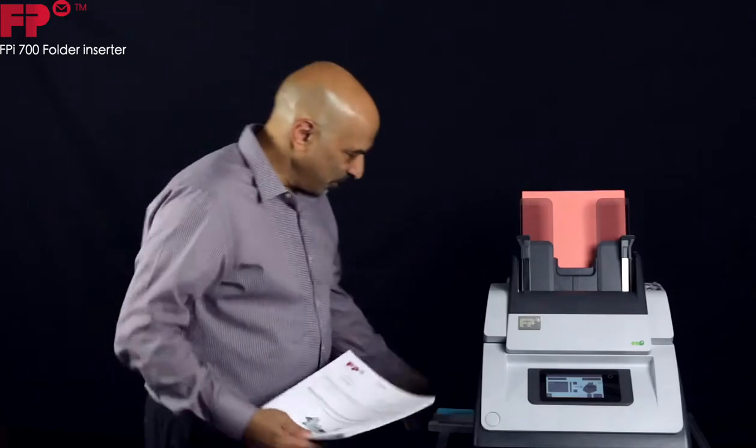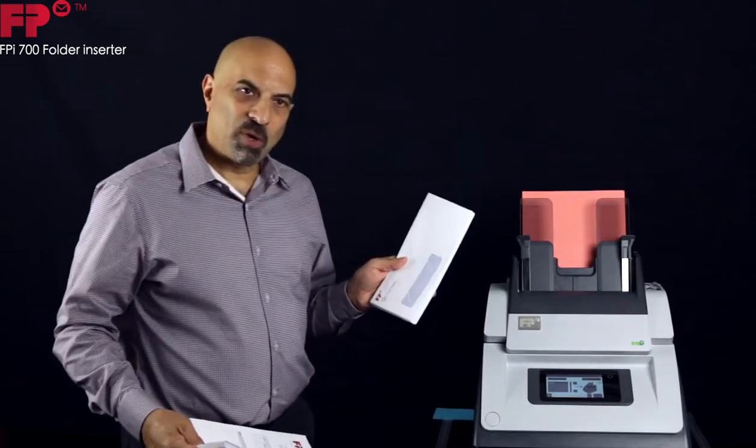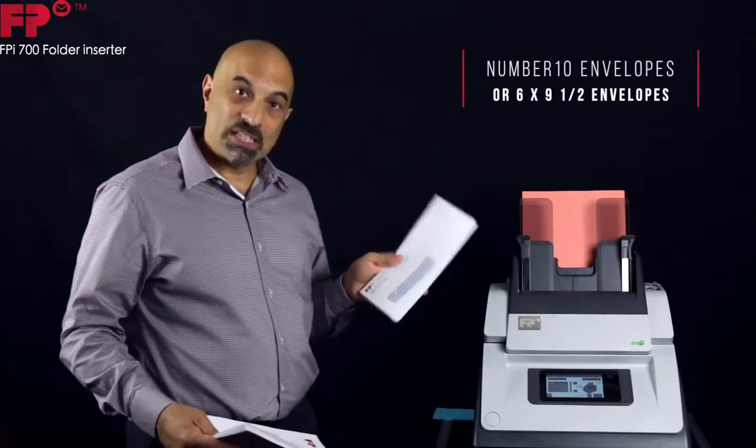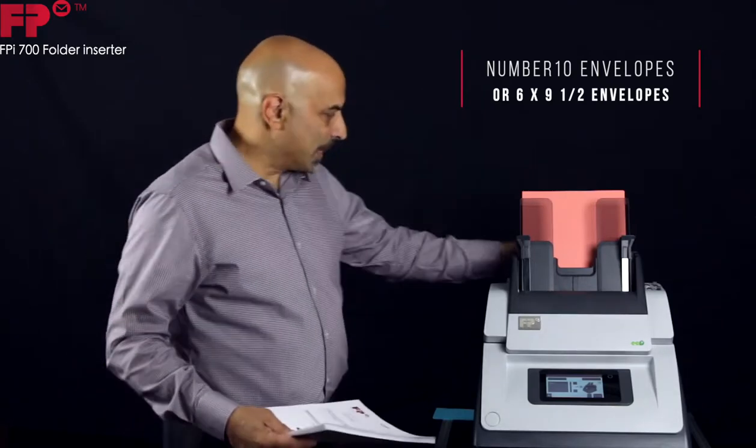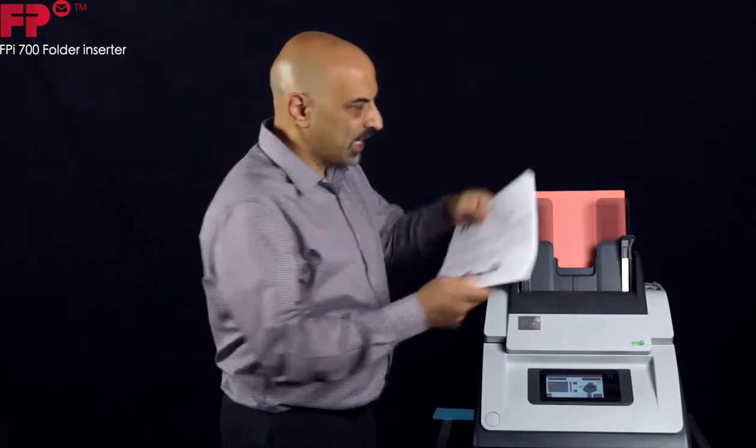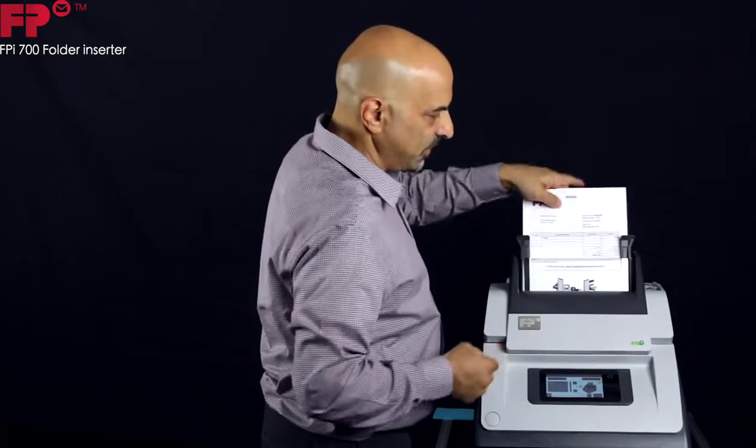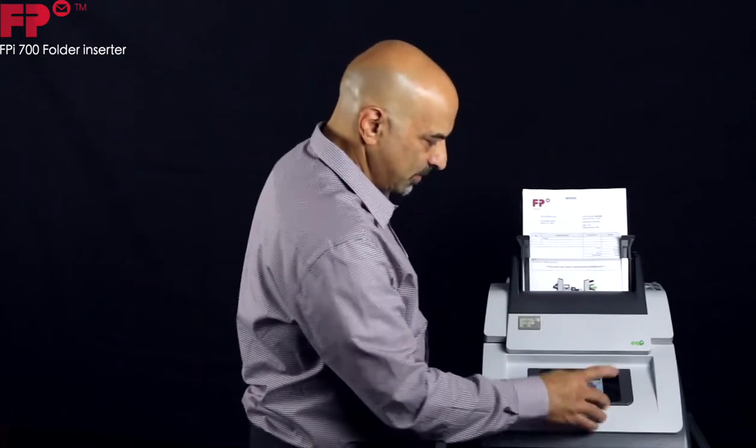And let me show you how that's done. First, you'll take your envelopes, whether they're number 10 envelopes or 6 by 9½ size envelopes, and you'll load them right here. You take your paper, you put it right in the feed tray, lock it, and press start.